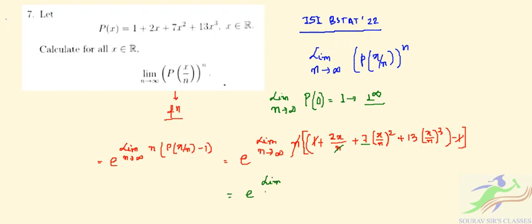e to the power limit n tends to infinity. So it is 2x + 7/n·x² + 13/n²·x³.